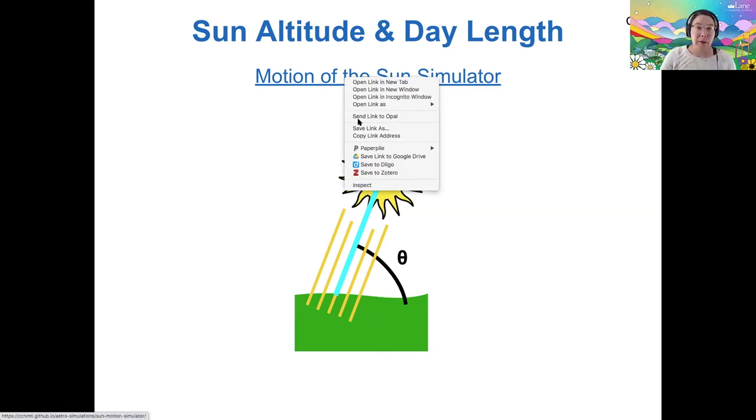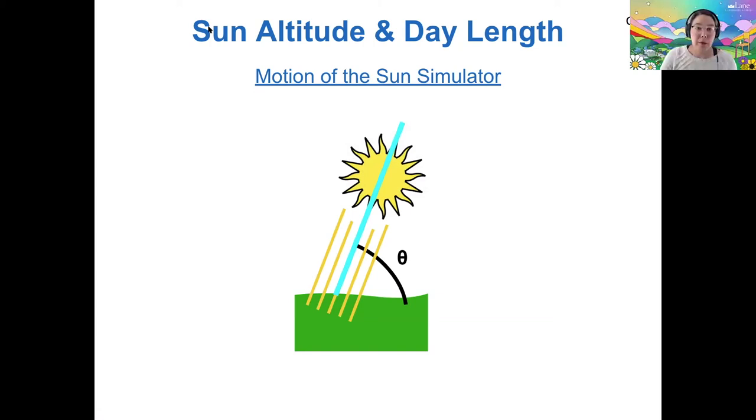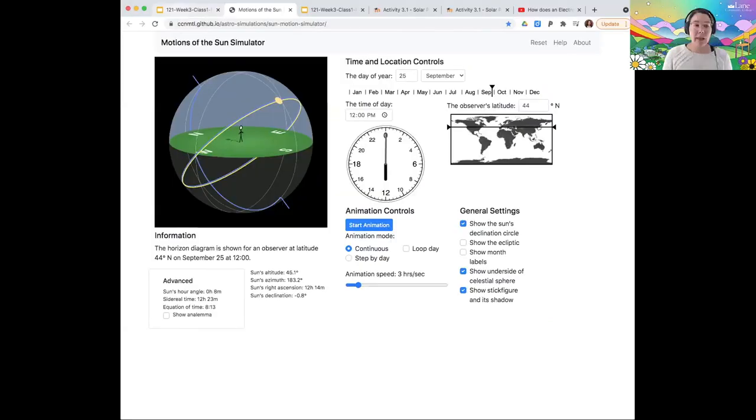I want to share with you a simulation tool that you can use. This one is available online. And basically what this is showing us is the observer with their view on their horizon. So we've got our cardinal directions, north, south, east, and west. And then the sun is here in the sky, and this circle illustrates the path of the sun on the sky. I've got this set up right now for, well, now September 21st in Eugene, so 44 degrees north at noon.